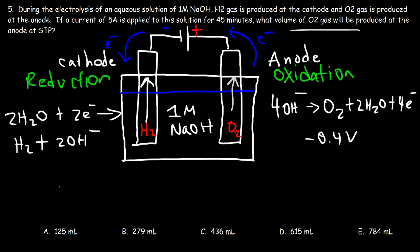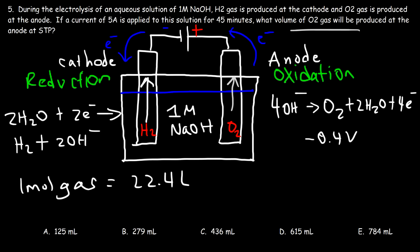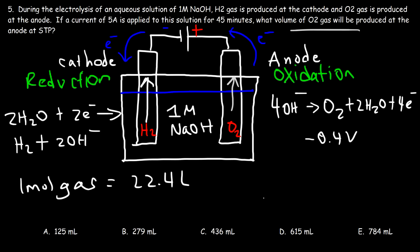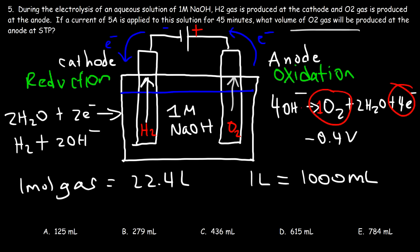At STP, 1 mole of any gas occupies 22.4 liters. If we calculate moles of O2, we can find the volume. The answers are in milliliters, so we'll need to convert liters to milliliters (1 liter = 1,000 mL). From the anode half reaction, 1 mole of O2 is produced for every 4 moles of electrons that flow through the circuit.